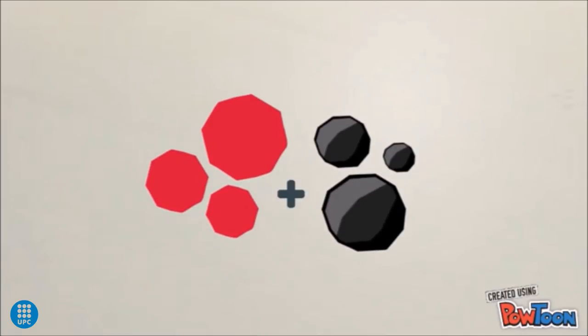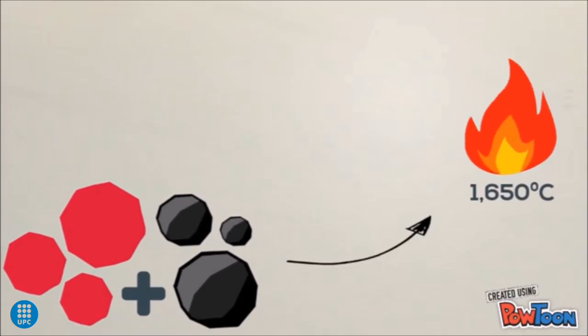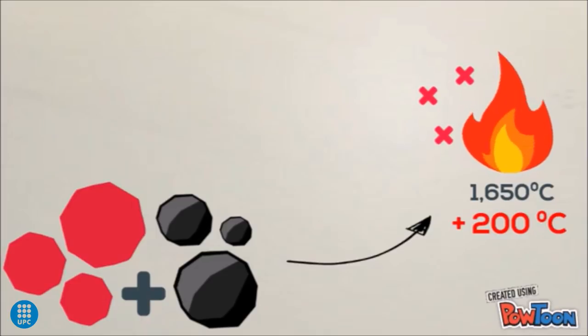Steel is made of an alloy of iron and carbon. This mixture is melted at 1650 degrees, which is 200 degrees more than cement. Then, it's separated from the impurities and shaped into the final form.